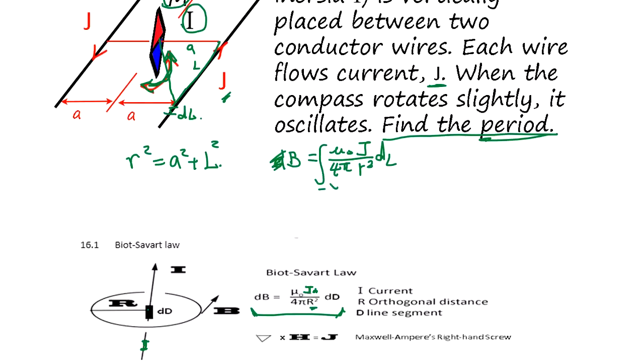Integrating from negative infinity to positive infinity: dL over A squared plus L squared. This integral equals pi, so B is going to be mu zero J over 4A.